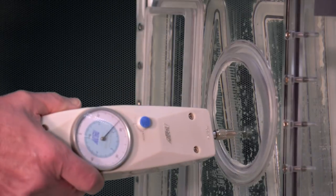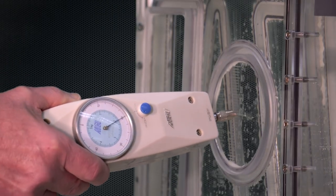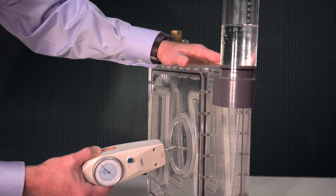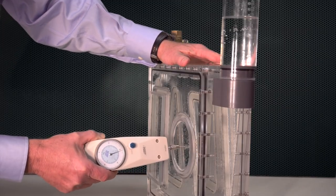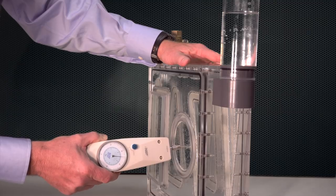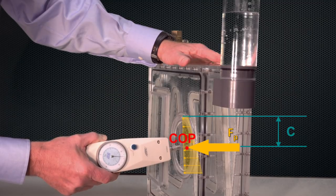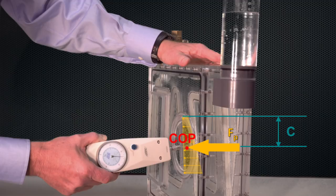By trial and error, we find the magnitude and location of the external force, Fe, needed to push the panel back flush with the box. Those values tell us the magnitude and location of the equivalent pressure force, Fp.